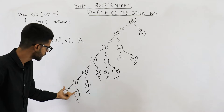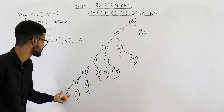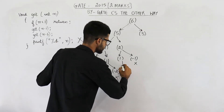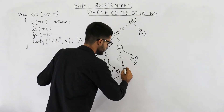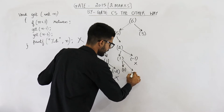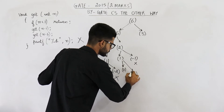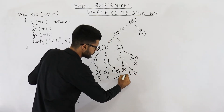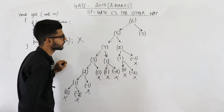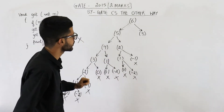Then get(1) will call two functions: get(0) and get(minus 2). Both will end. This part is now complete.